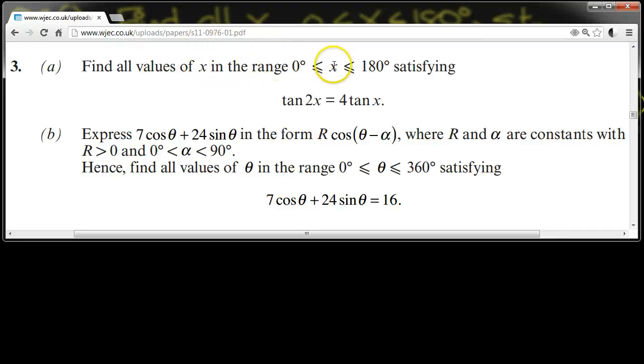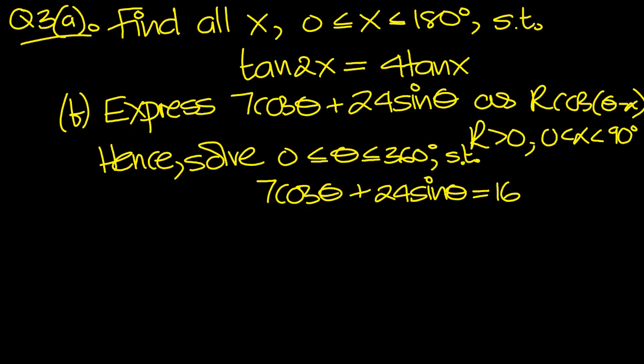Find all the values of x in the range of x between 0 and 180 degrees, satisfying tan 2x equals 4 tan x. So let's have a look at that first part then, so A. Let's use a double angle formula for tan, which is 2 tan x over 1 minus tan squared x.